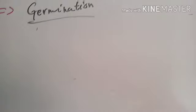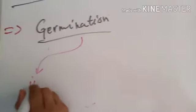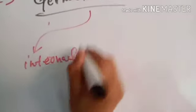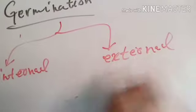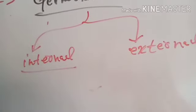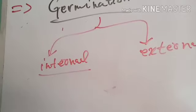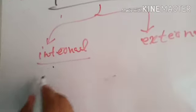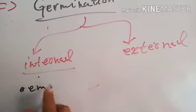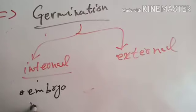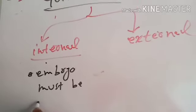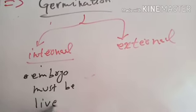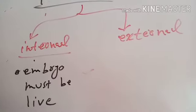The limiting factors or conditions required for germination are of two types: internal conditions and external conditions. Internal factors which affect the process of germination include that the embryo must be alive. If the embryo present inside the seed is not alive, is dead, then there will be no germination.